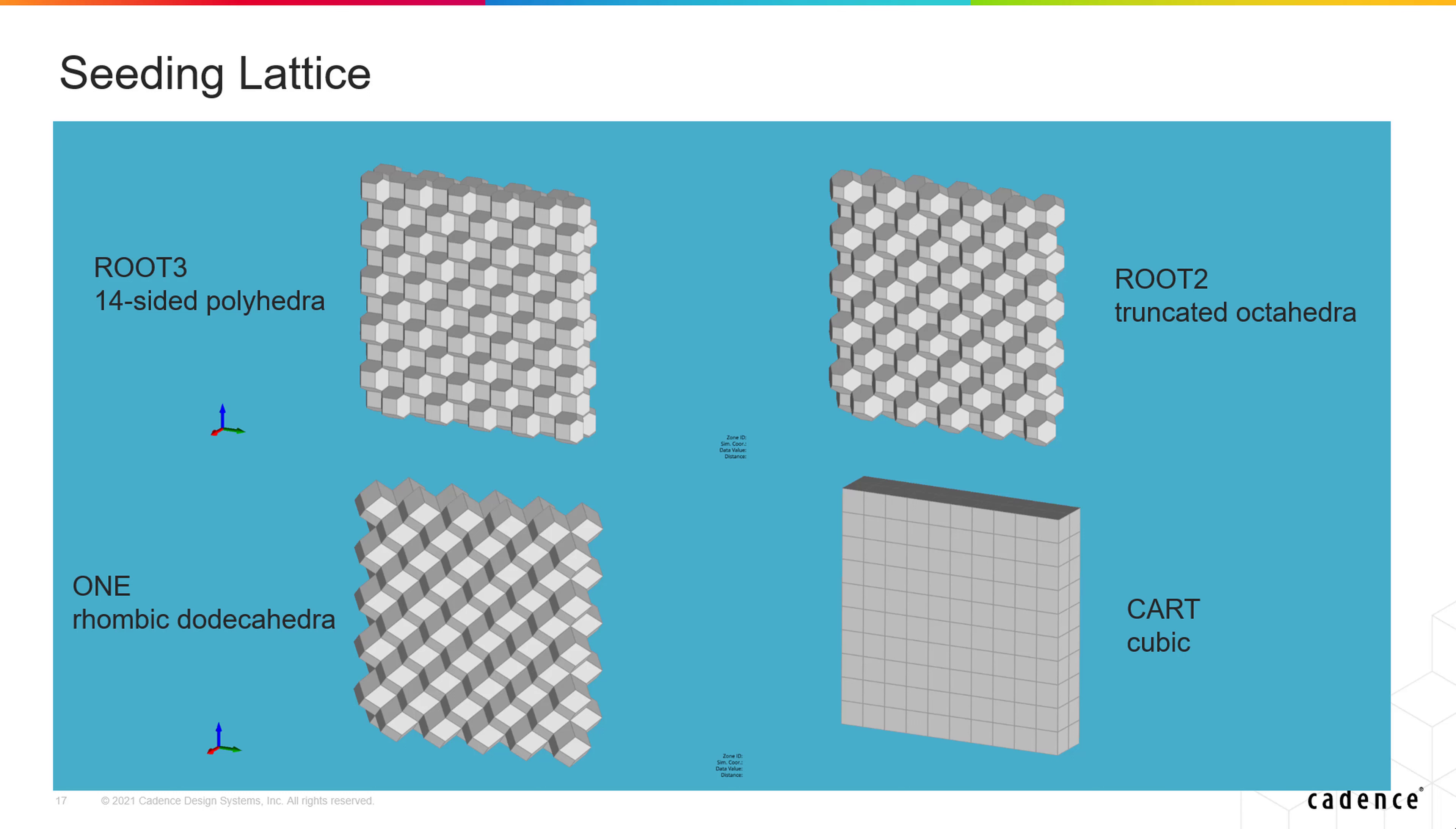Most of the time, you will use the default root 3 lattice, which was the first one implemented and the most heavily used and tested. The clearest benefit of a cubic lattice is its lower computational cost due to the lower face count per cell. But the lower face count also means less communication with neighbors and less mixing, which could potentially reduce the solution accuracy.